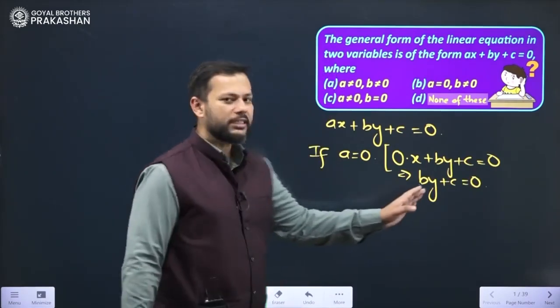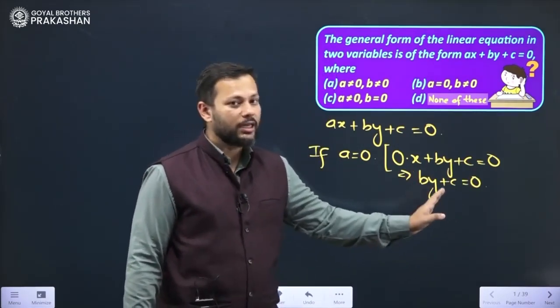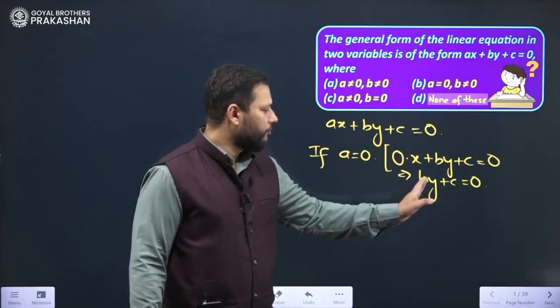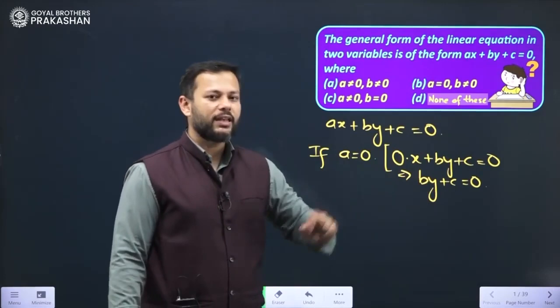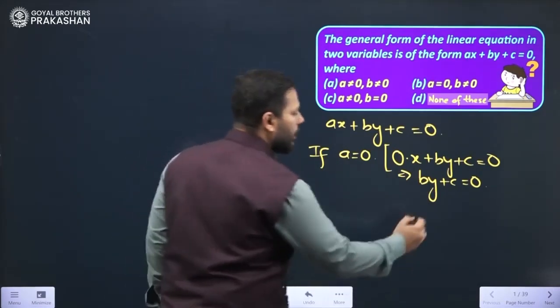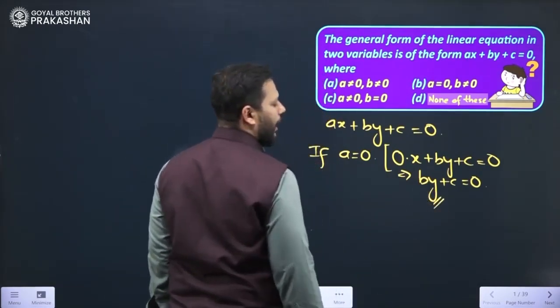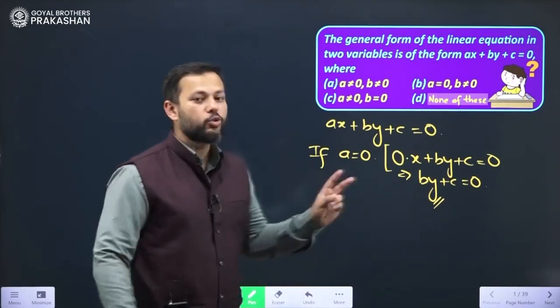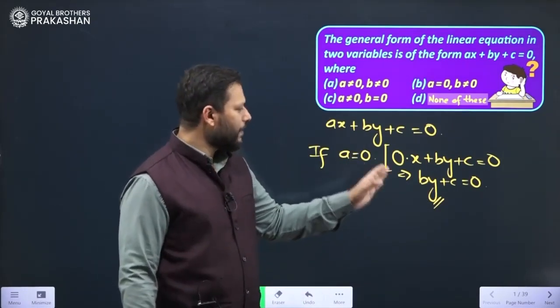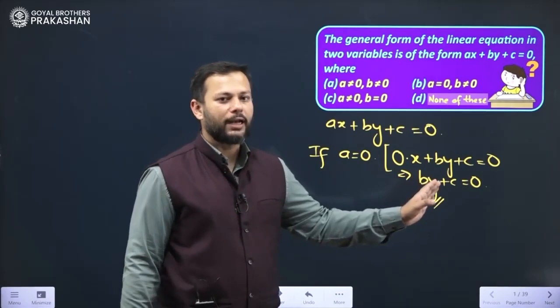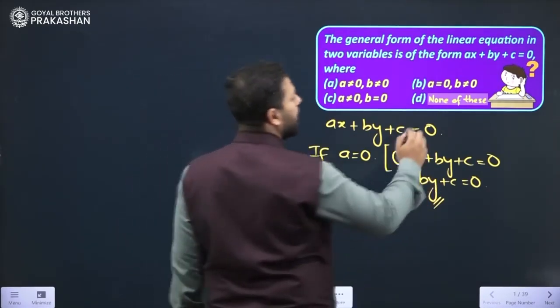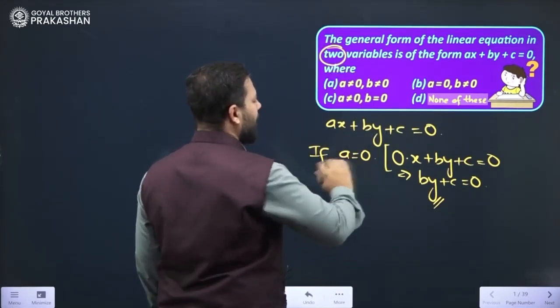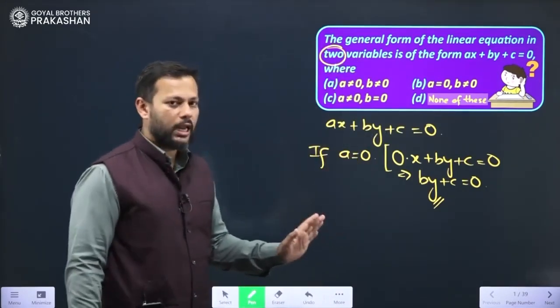So this also is definitely an equation. It is an equation in linear form only because the exponent of the variable is 1. But here how many variables do we see? We find only one variable that is y. So we do not have it in two variables. So when a becomes 0 this equation becomes linear equation in one variable. But we are in need of the linear equation of two variables. So a can never be 0.